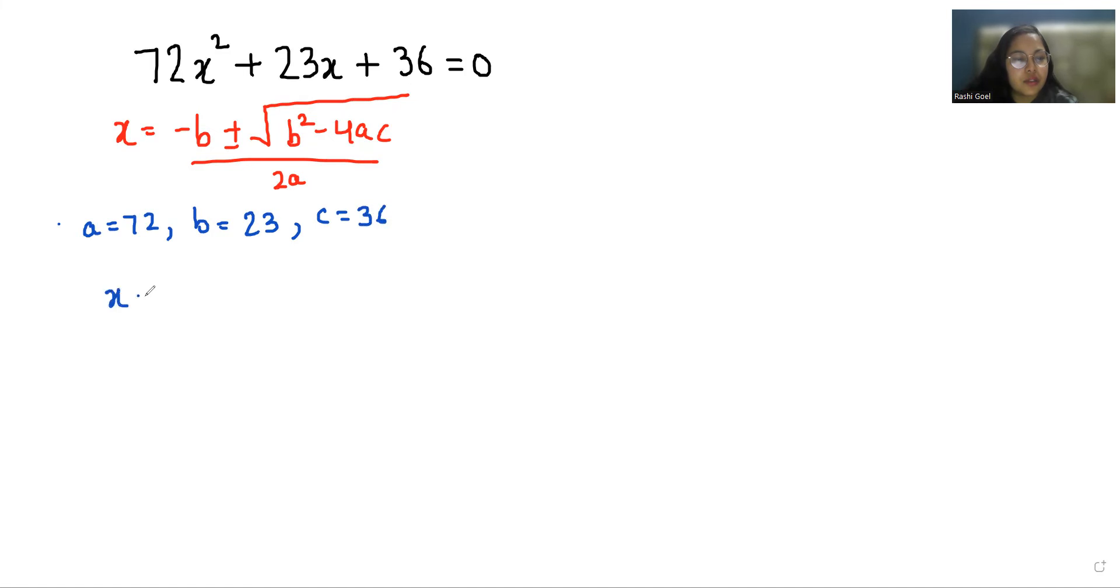So x equals minus 23 plus minus under root 23 square minus 4 times 72 times 36 by 2 times 23.